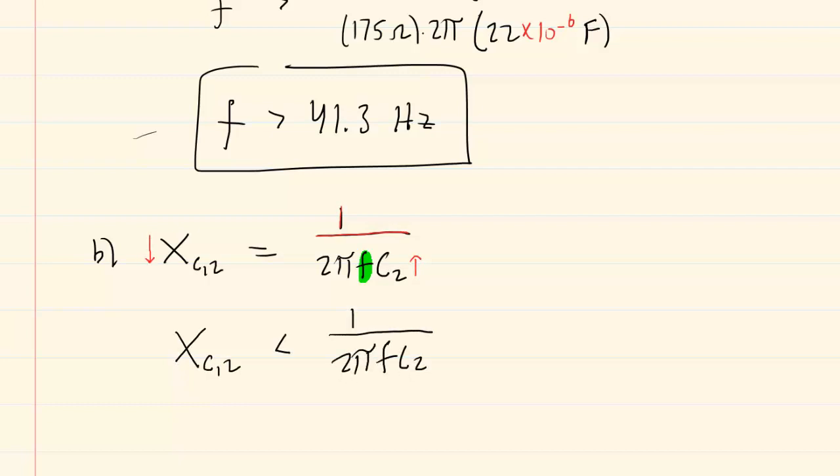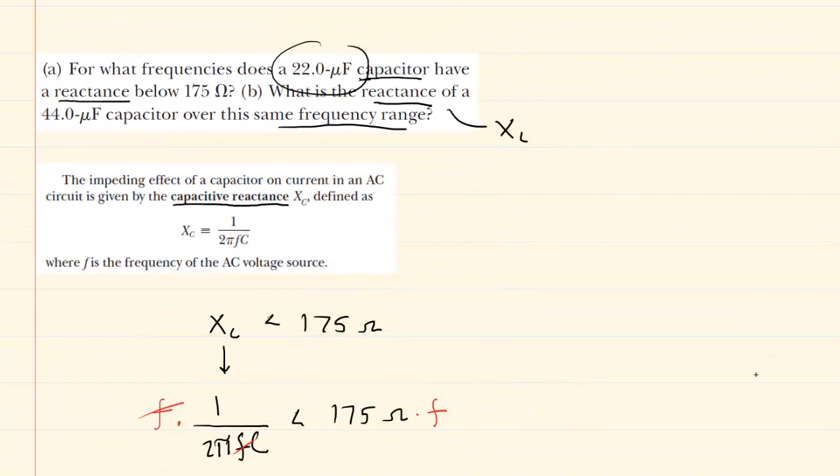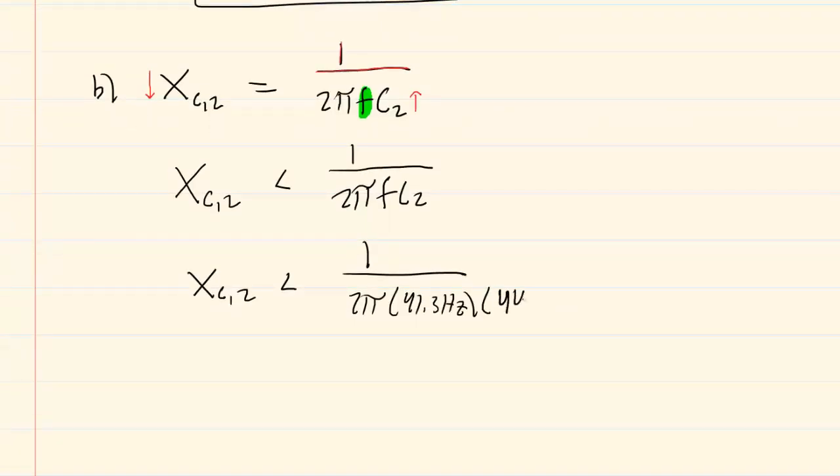What we'll do is we'll plug in the frequency limit that we found in part A, which was that 41.3 hertz. And then this capacitance has a value in part B of 44 microfarads. So you'll have 44 times 10 to the minus 6 farads. So let's plug this into our calculators very carefully.